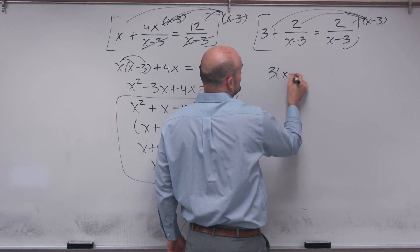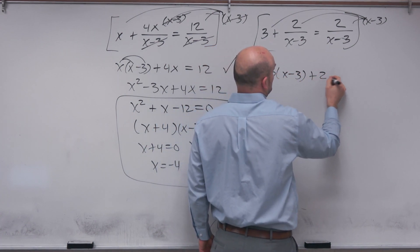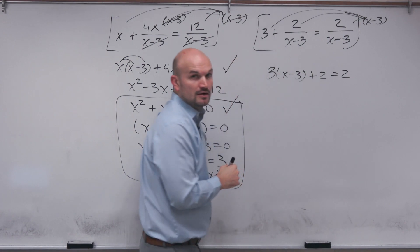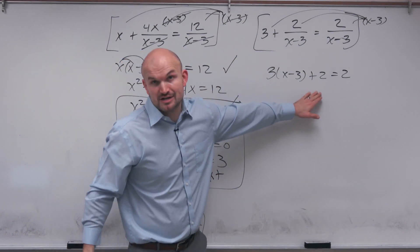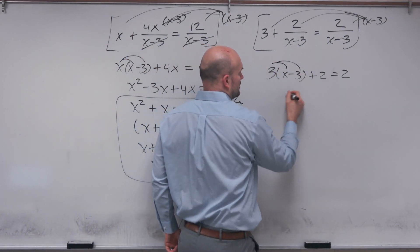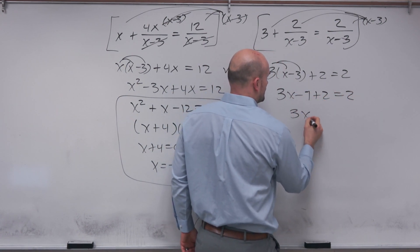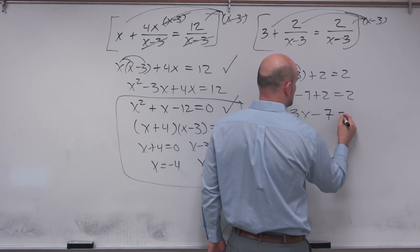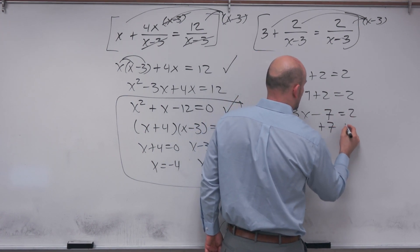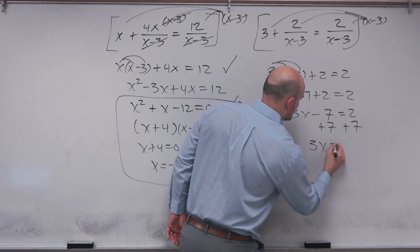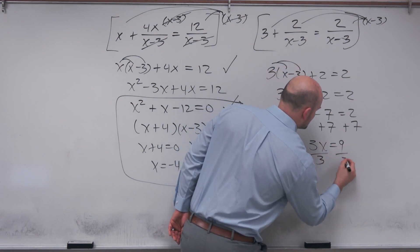So let's just multiply by x minus 3 times everything again. And when doing that, I'm going to get 3 times x minus 3 plus 2 equals 2. So now by doing this, I have actually created a linear equation. Distributive property, 3x minus 9 plus 2 equals 2. 3x minus 7 equals 2. Add 7. 3x equals 9. Divide by 3. X equals 3.